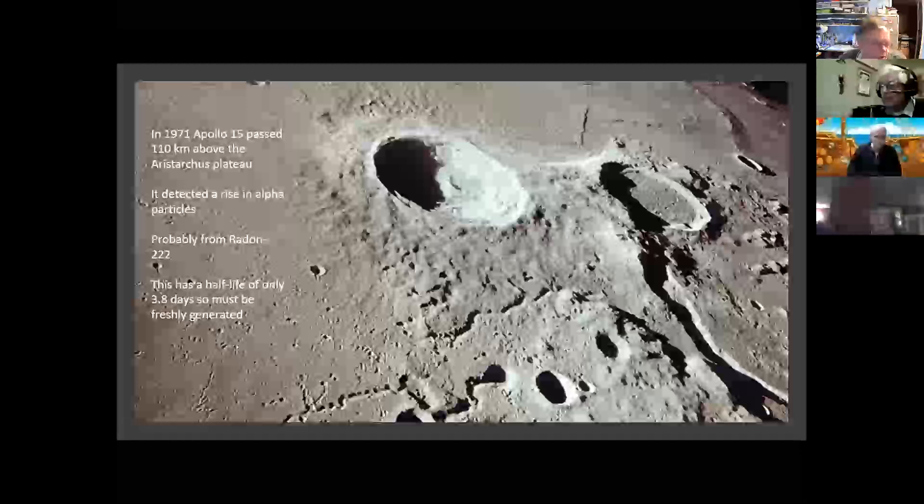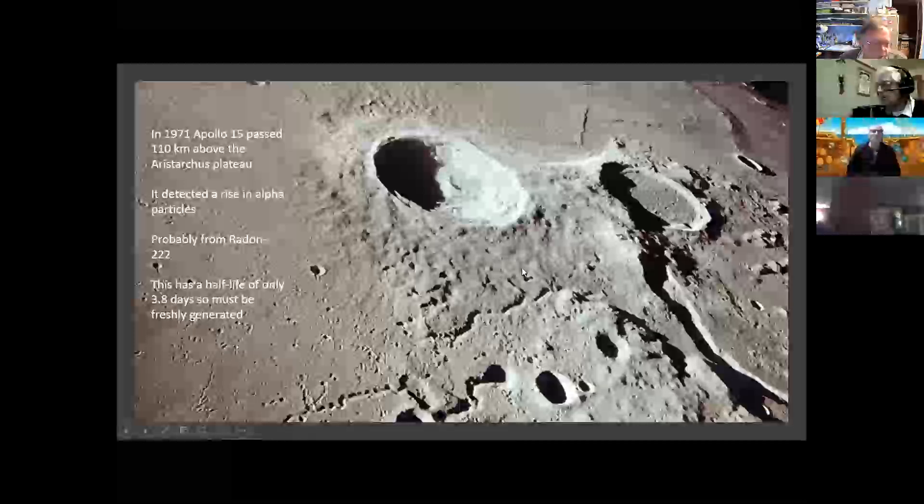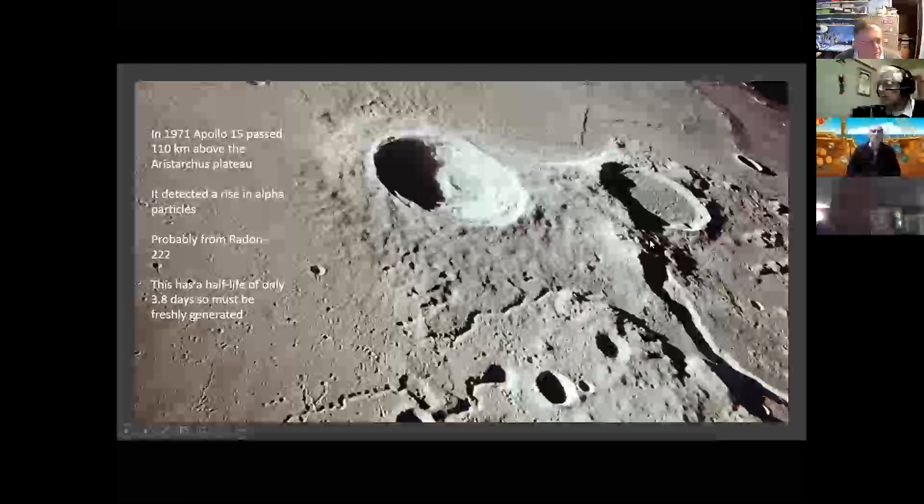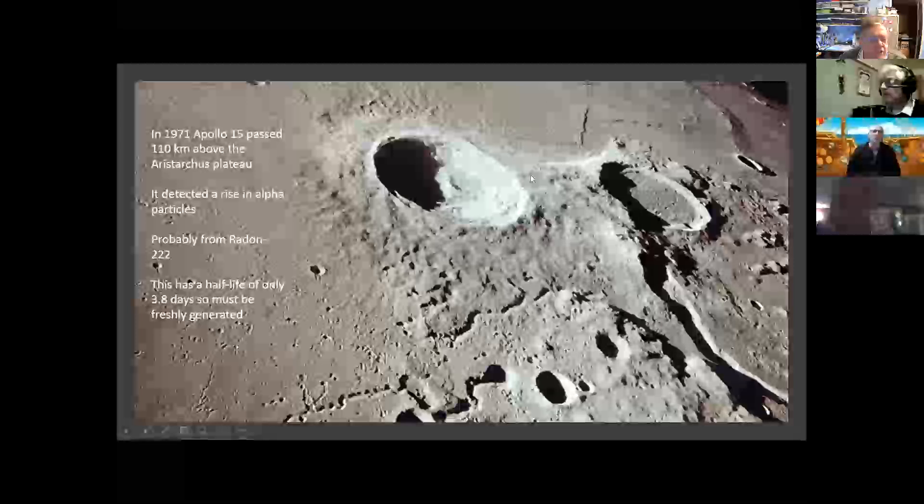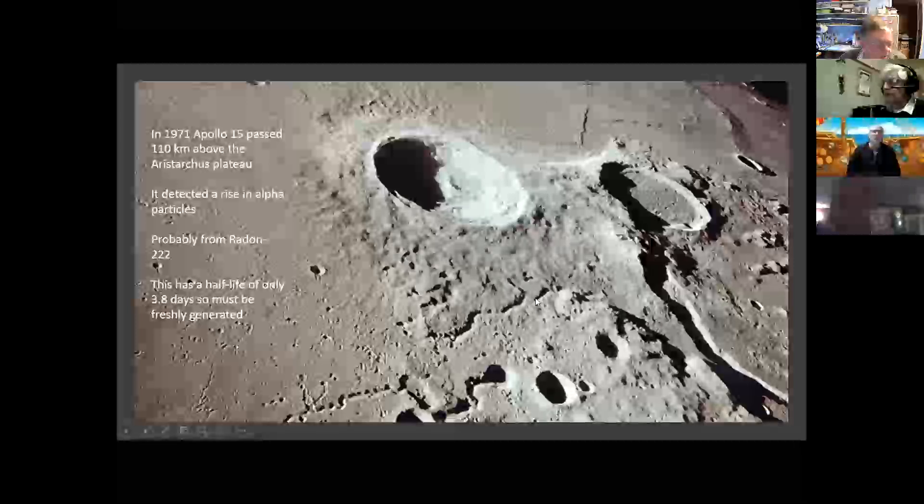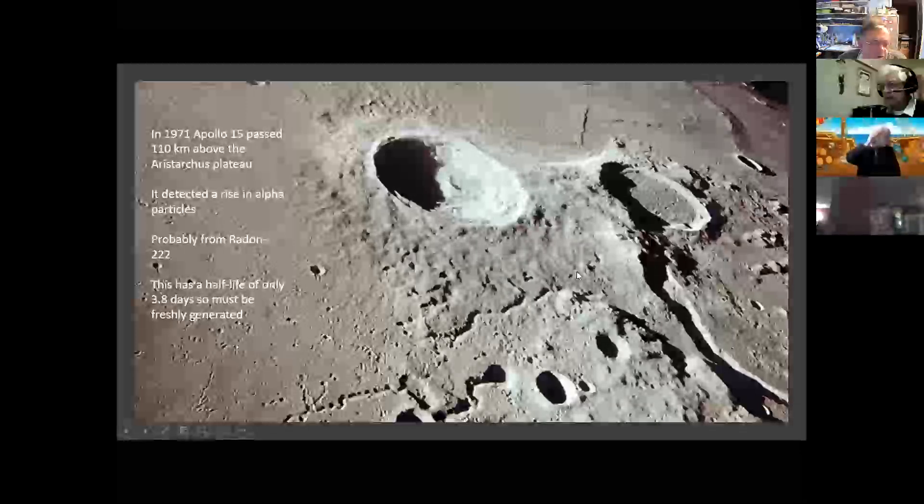And Apollo 15 flew over Aristarchus and detected radioactivity in the form of alpha particles coming from radon gas, radon 222, which is a decay product of nuclear reactions involving things like uranium. But it only has a half-life of 3.8 days, so for there to be a cloud of it that Apollo 15 could fly through, it must have been released fairly recently. And this is associated with the fact that some people see what are called transient lunar phenomena in this region, where clouds of gas and dust appear to emerge and then float over the surface. And so something definitely going on in this region.